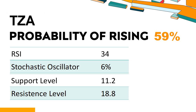The current stochastic oscillator of TZA is 6%. When the indicator falls below the 20 level, it is usually considered oversold, indicating that a price rebound or recovery is likely for the stock. An oversold condition occurs when the stock price falls too fast and too much in a short period of time, which may indicate that the selling pressure has exhausted.